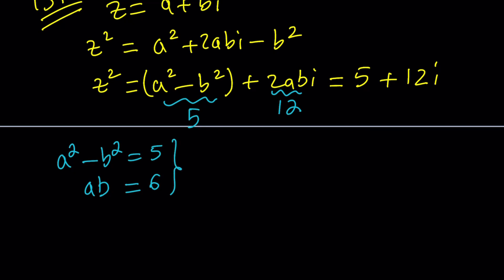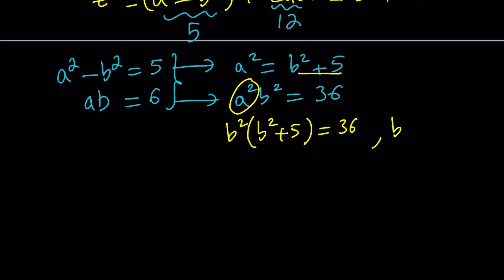I'm going to show you a couple different ways to solve this system. One of them is going to be substitution. Let's go ahead and isolate a squared from the first one, and write it as b squared plus 5, and then square the second equation, which gives us a squared b squared equals 36. Now we can replace a squared with b squared plus 5. b squared times b squared plus 5 is equal to 36. At this point, we can call b squared c so that we get a quadratic equation.